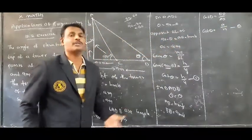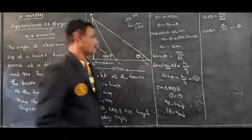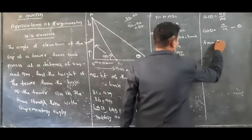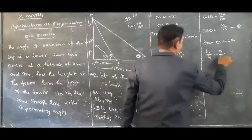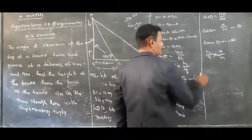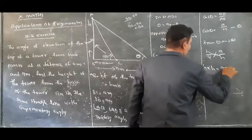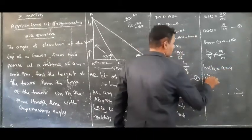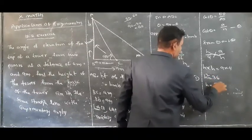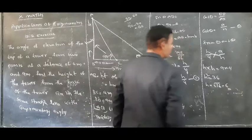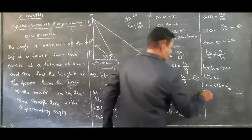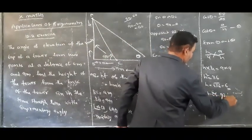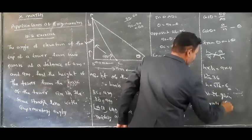From equations 1 and 2, both are values of cot(theta), so we can write H over 4 equals 9 over H. Doing cross multiplication: H times H equals 9 times 4, so H squared equals 36. Therefore H equals square root of 36 equals 6. H is the height of the tower, so the height of the given tower is equal to 6 meters.